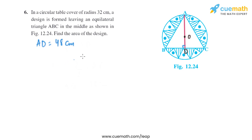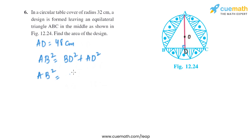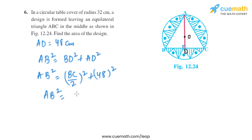Now we use Pythagoras theorem in triangle ABD to find side AB. So AB² = BD² + AD². We know BD = BC/2, so AB² = (BC/2)² + 48². Since AB and BC are equal in an equilateral triangle, this becomes AB² = (AB/2)² + 48².